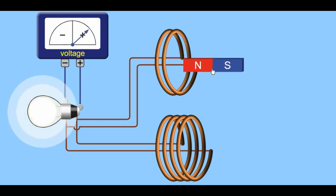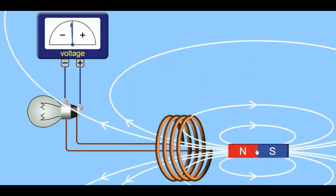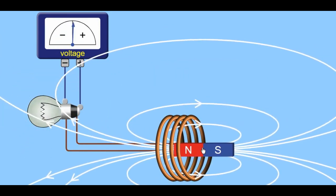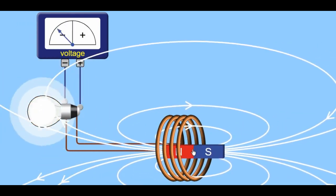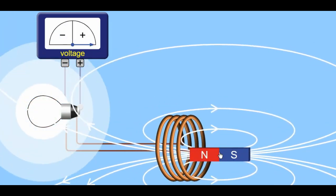If there are fewer turns, you will get a smaller current. Looking at the field lines, you can see that it's only when the magnet or the coil is moving that the lines are cut and electricity is generated.